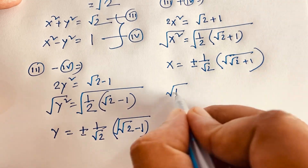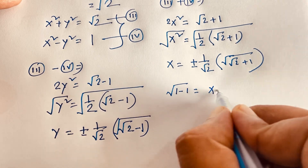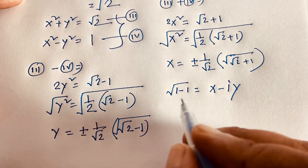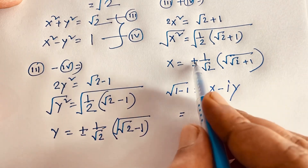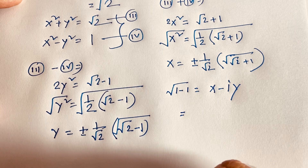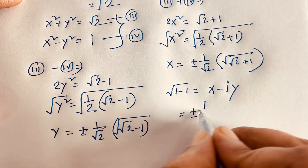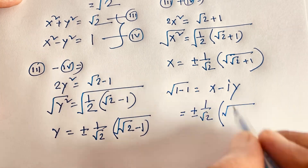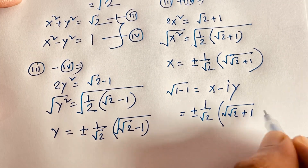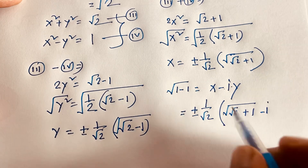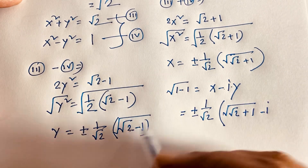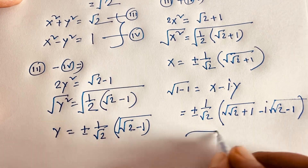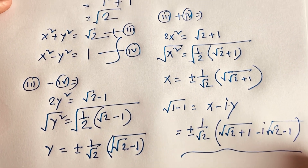Recall we let √(1 minus i) equal x minus iy. We find x equals this value and y equals this value. The common factor is 1 over √2, so the final answer is: plus or minus 1 over √2 times (√(√2 plus 1) minus i·√(√2 minus 1)). This is our final answer.